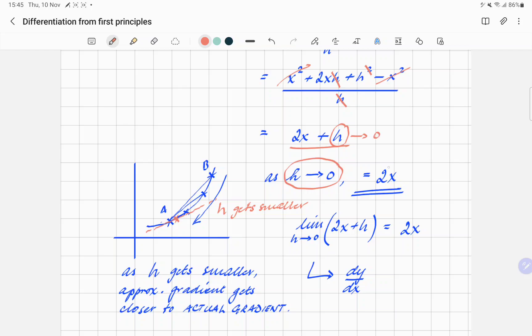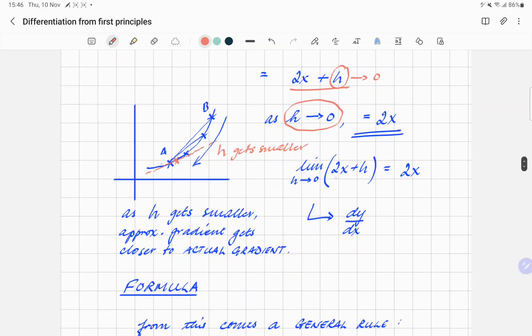And therefore you're left with 2x is your gradient at any given point on that curve. So the way you write it correctly in maths, the limit of 2x + h as h approaches 0, the value becomes 2x. This is what we call dy/dx. So that means the differential of the function.